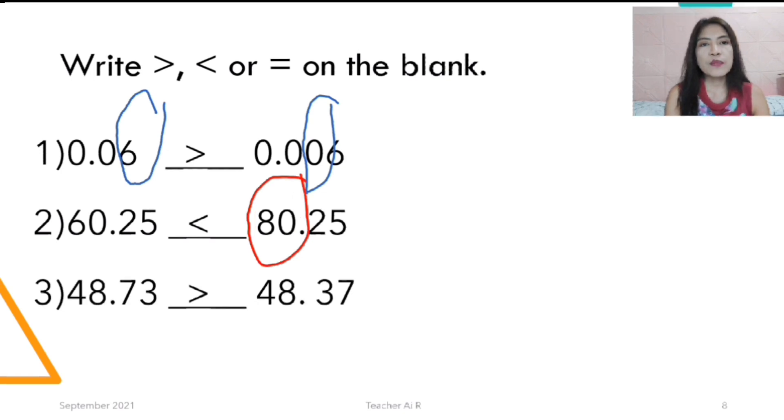Number 3. It's 48. They have the same 48. But we're going to compare the 10th. 7 is bigger than 3. So we have 48.73 is greater than 48.37.